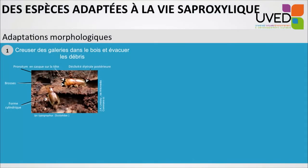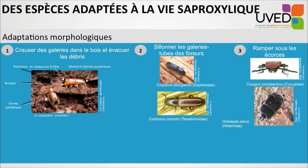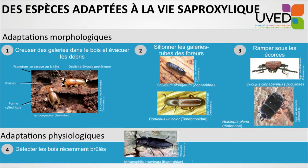First of all, these species have adapted morphologically. Here we have an example: the typographic Ips. The body is adapted to dig in wood and evacuate debris. We see that they have a sort of helmet on the head, a long body, and brushes at the front to dig galleries. The second type of morphological adaptation is the sub-cylindrical long body of some species, adapted to travel through galleries previously dug by other organisms. Other animals are adjusted to travel under the bark.